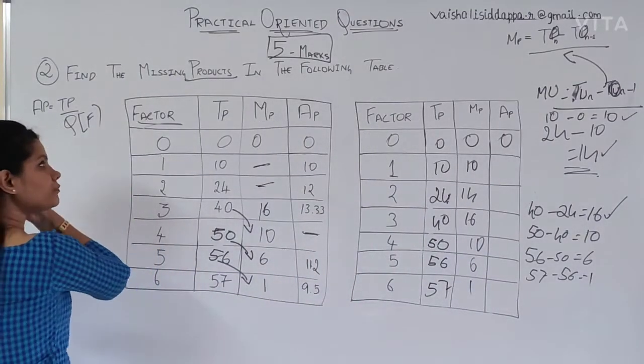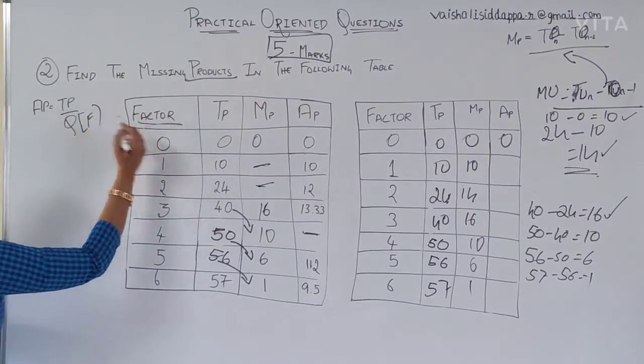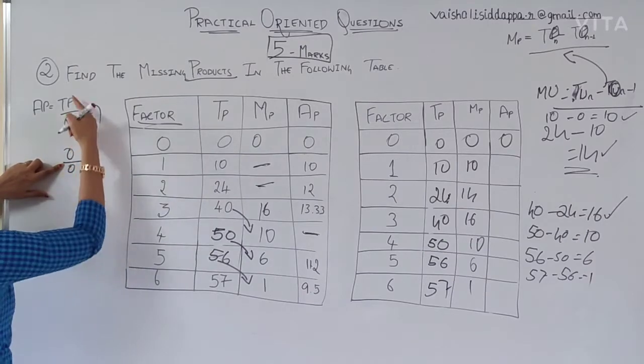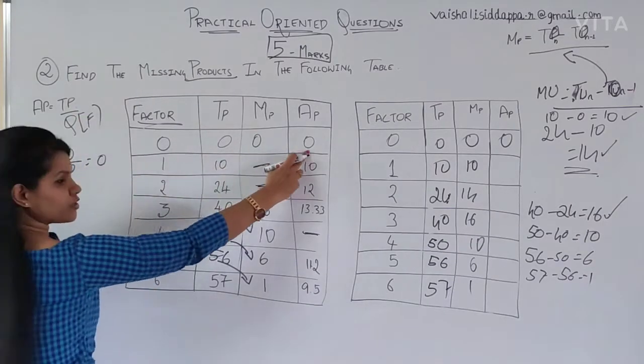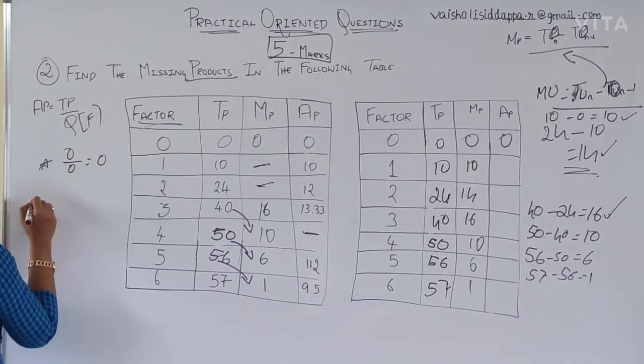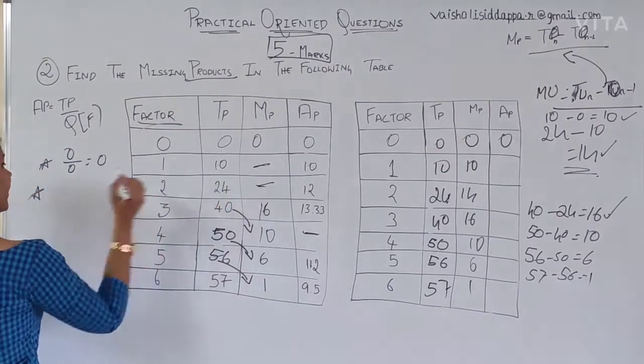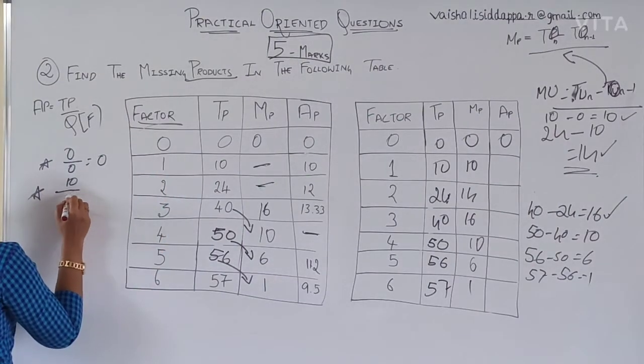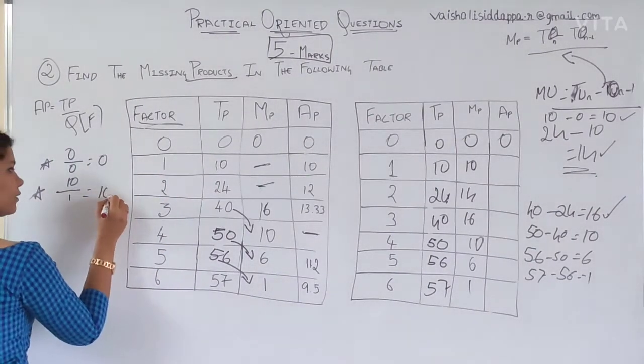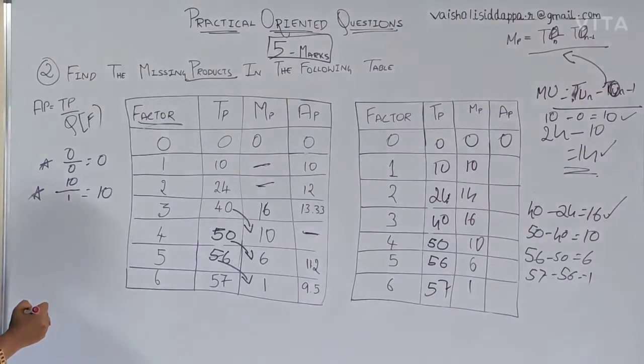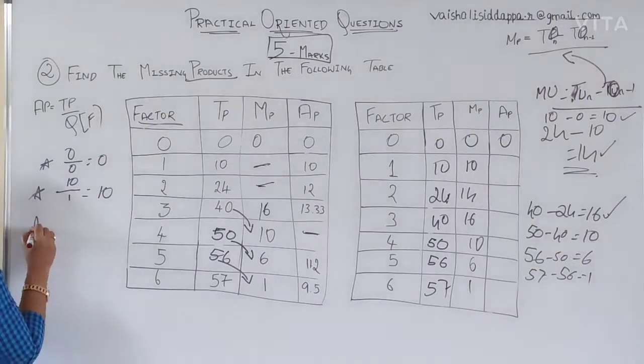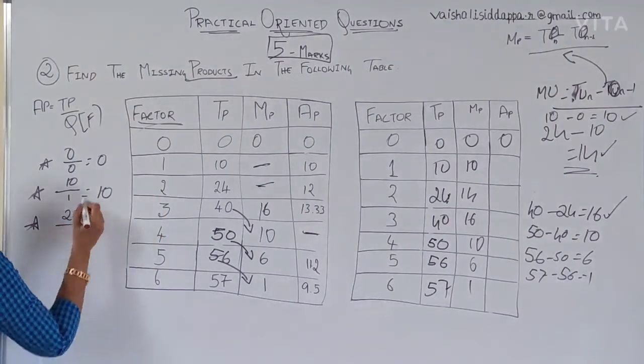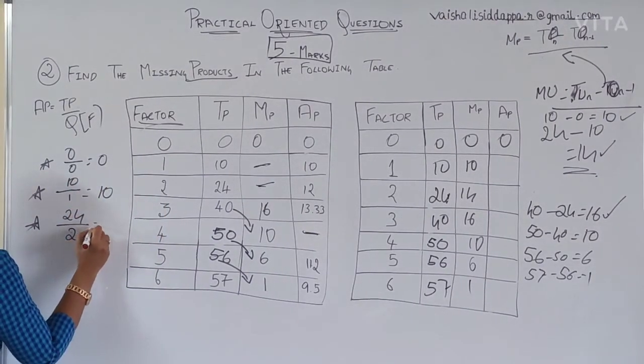So, for example now, the factor, total is 0. Factor is also 0. This is 0. Can you see this? The next one now. TP is 10. Factor is 1. It's nothing but 10. Is it clear? So, next one. The total is 24. Factor, which is Q is 2, is 12.